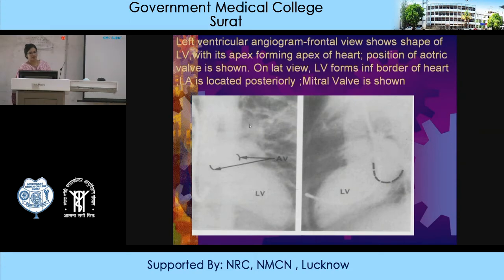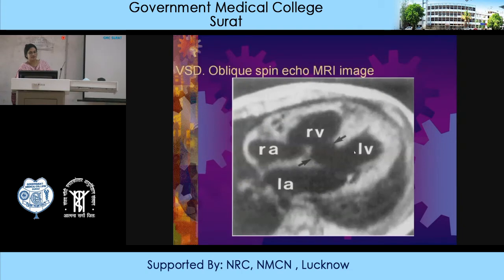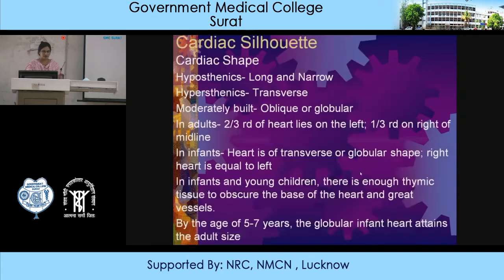This is a case of VSD seen on an oblique scan — there is a defect in the interventricular septum. Regarding cardiac shape: in hyposthenics it is long and narrow, while in hypersthenics it is transverse. In moderately built people it will be oblique or globular.